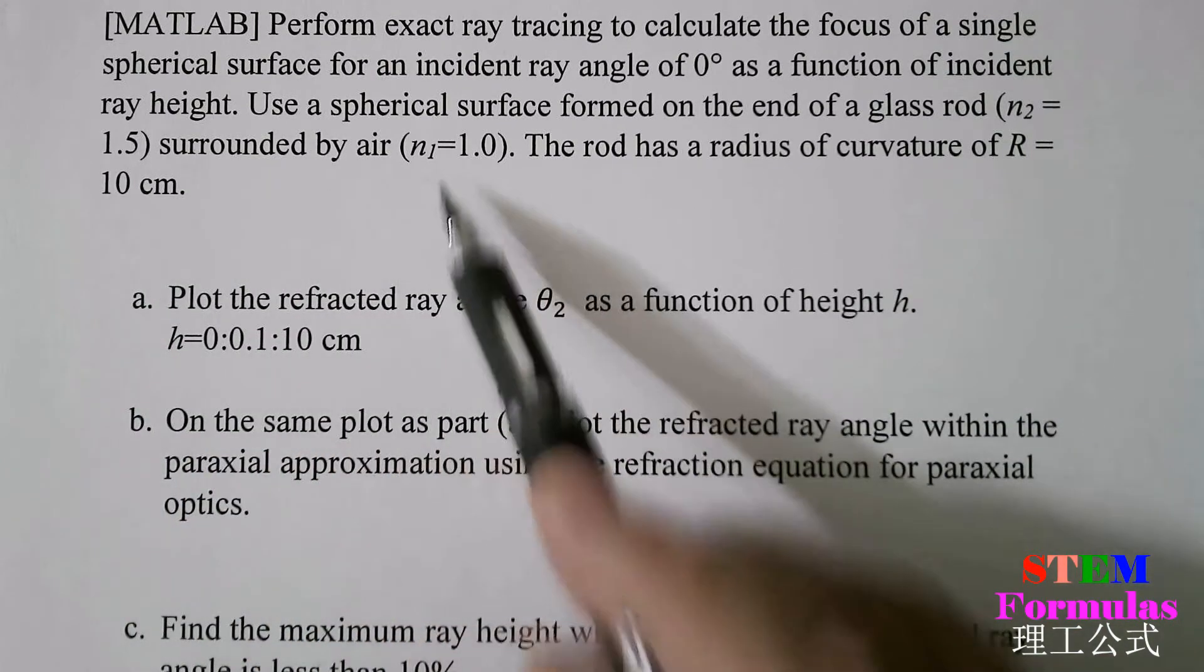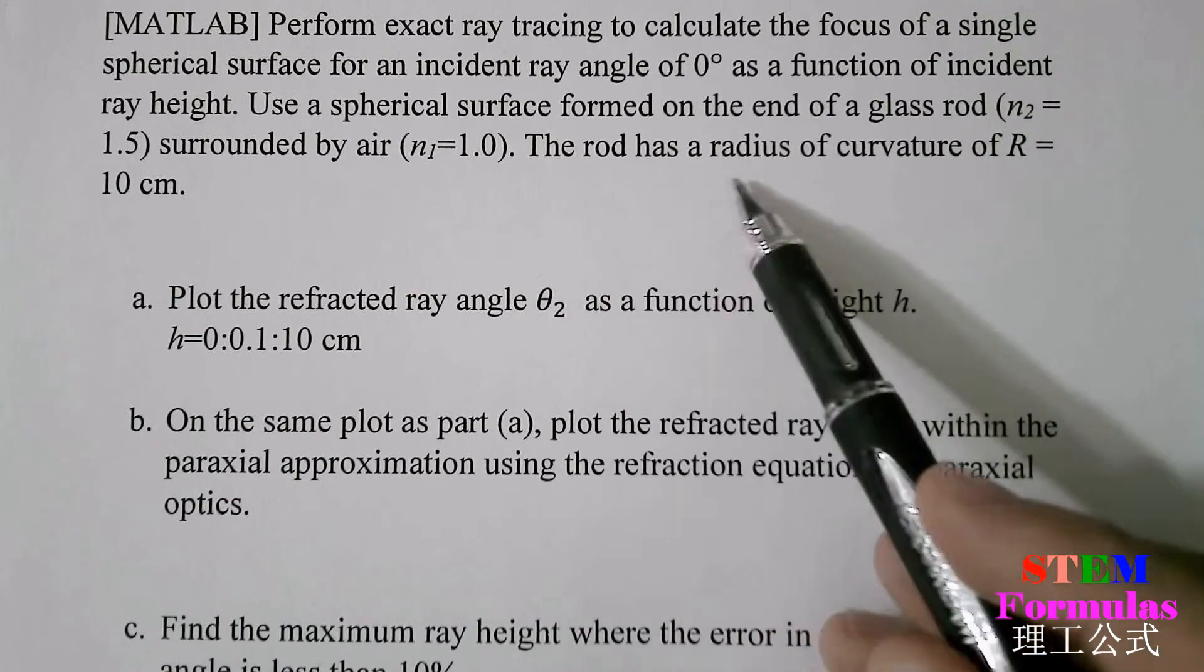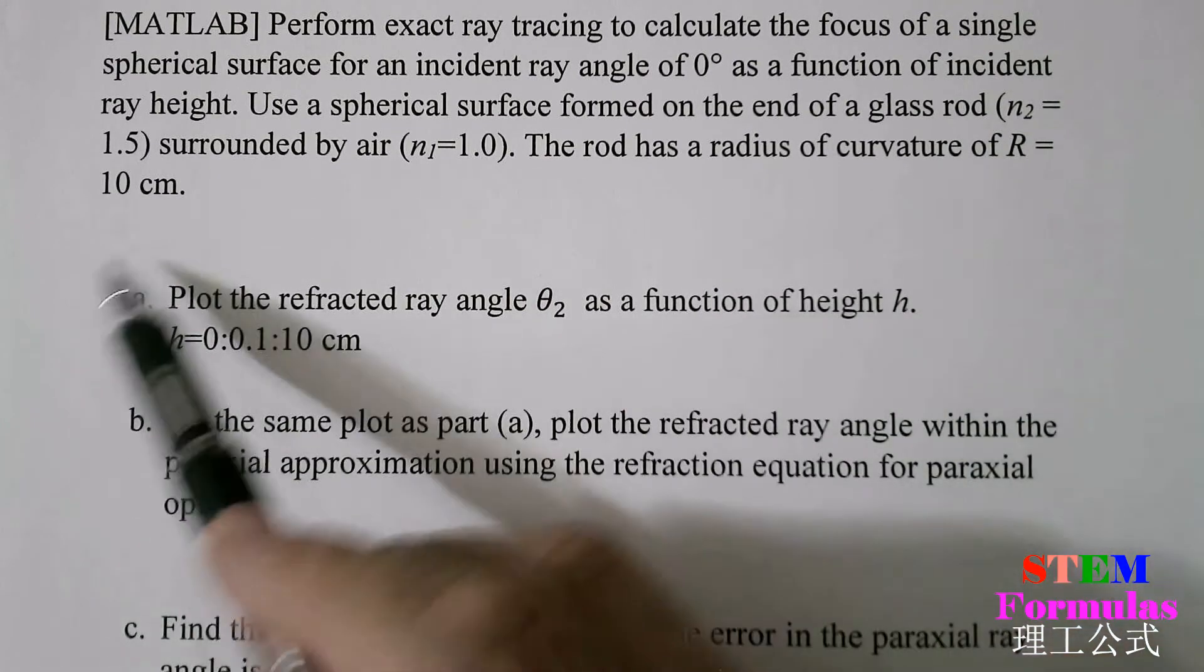N₂ equal to 1.5, surrounded by air, N equal to 1.0. The rod has a radius of curvature of R equal to 10 cm.